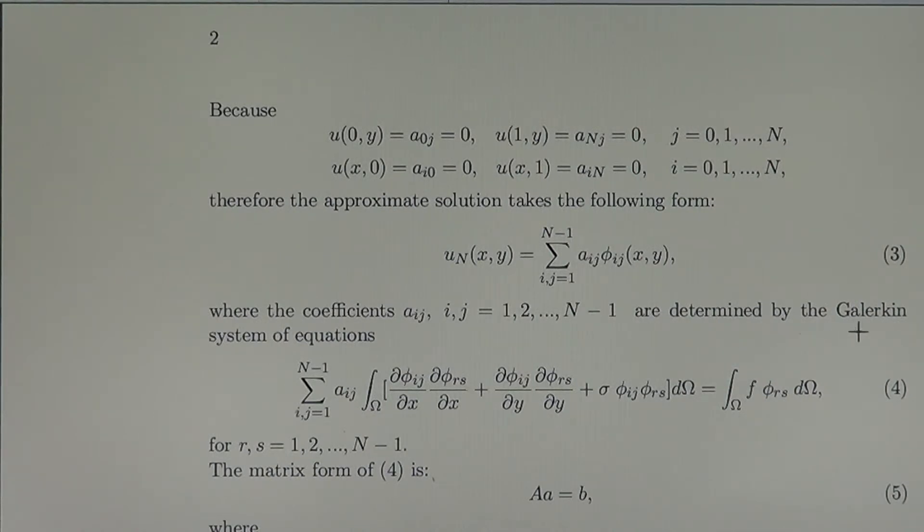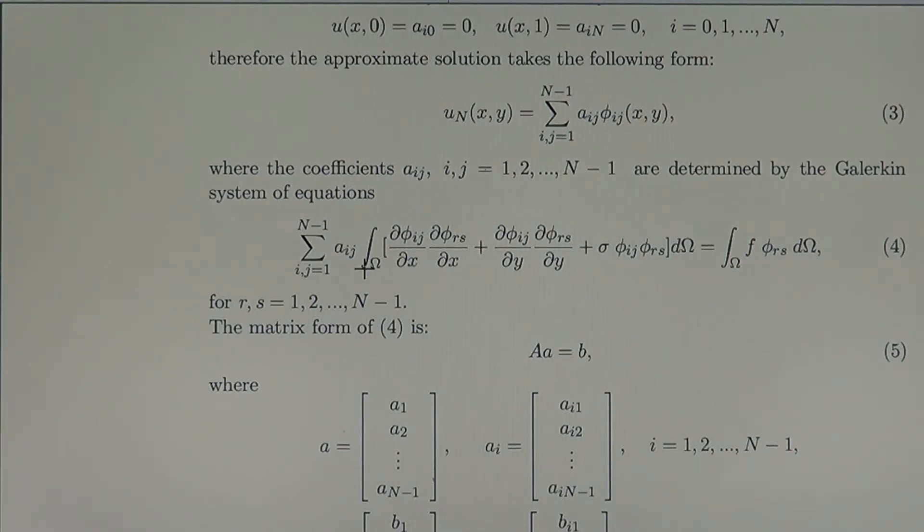These coefficients are determined by Galerkin's system of equations. The remaining coefficients, which are related with interior nodes, we determine by the variational equation, by the system of equations. When we substitute for eta the coordinates, we come to the variational form for the coordinates, which is in fact the system of linear equations, as many equations as we have unknowns, where ij is from one to N minus one.